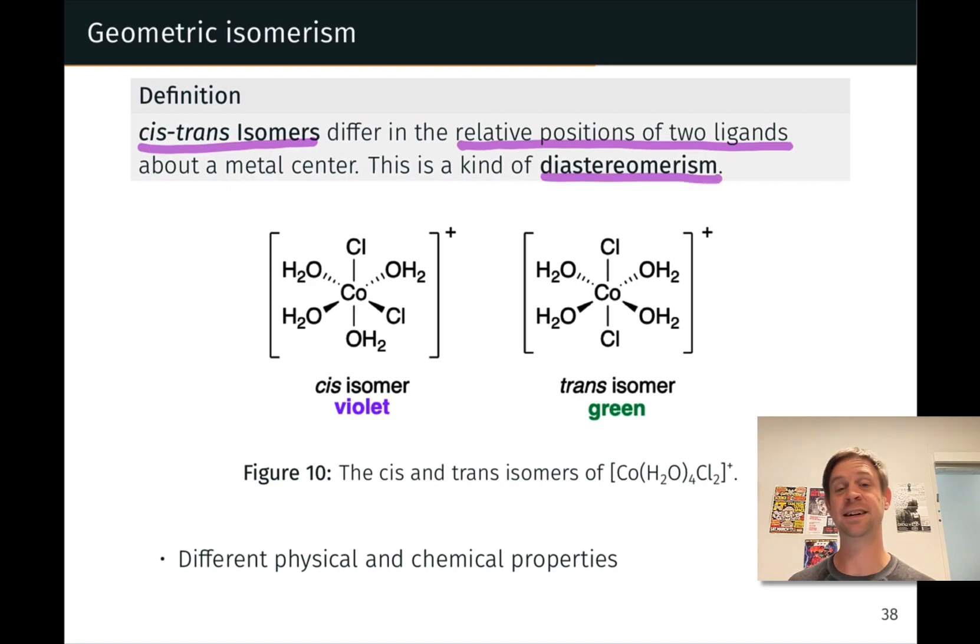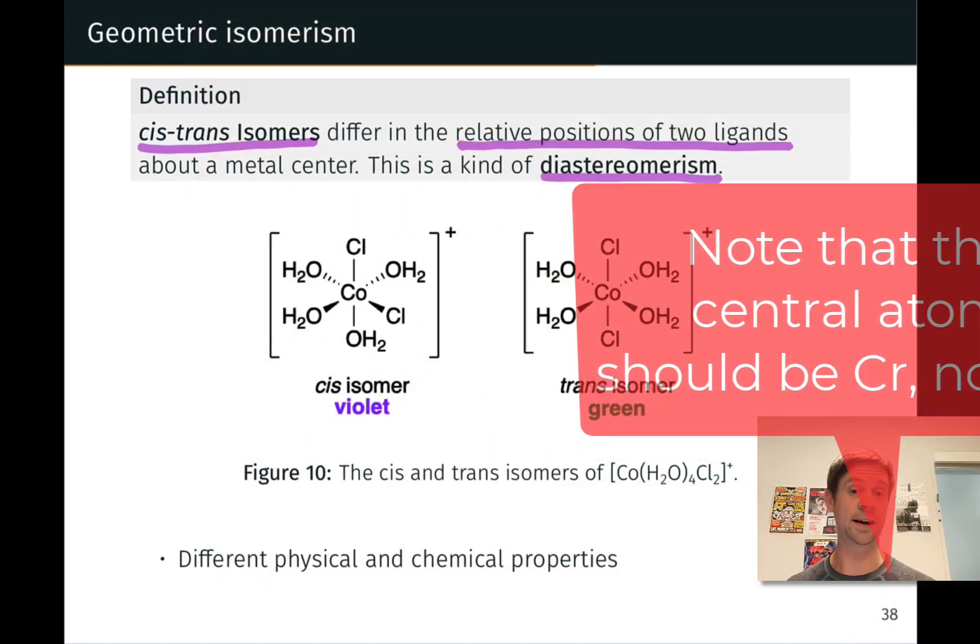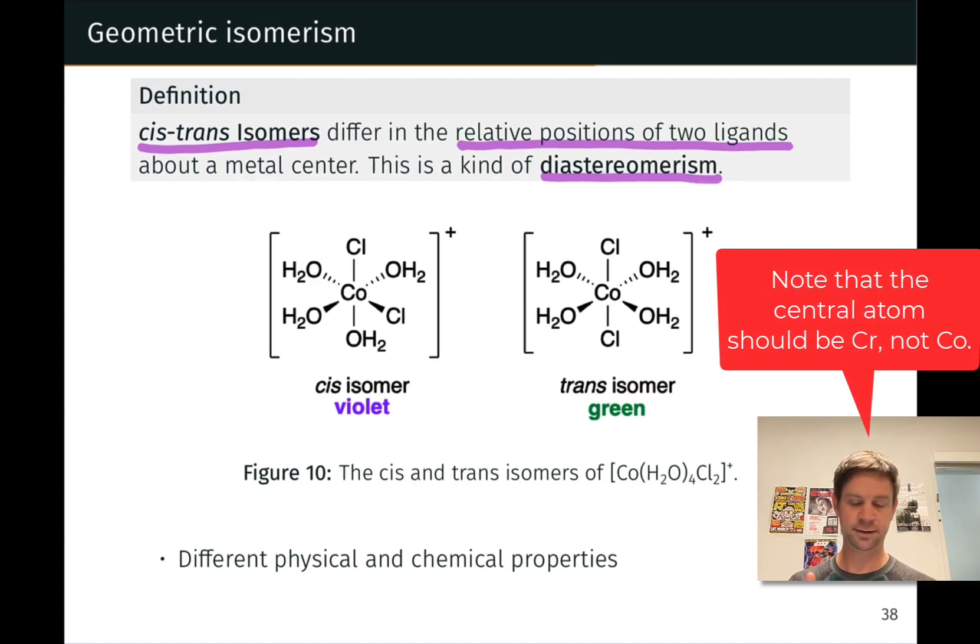So this is a kind of diastereomerism since cis and trans isomers are always diastereomers. A classic example of cis-trans isomerism is shown at the center of this slide with these dichloride complexes. This complex on the left has the two chlorines relatively close to one another. This is a cis relationship here.